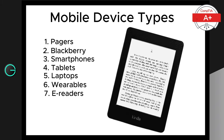Next we have e-readers. E-readers are specialized devices designed for reading digital books. They use e-ink technology, which is easy on the eyes and great for reading in bright sunlight. Popular e-readers include the Amazon Kindle and Kobo e-reader.